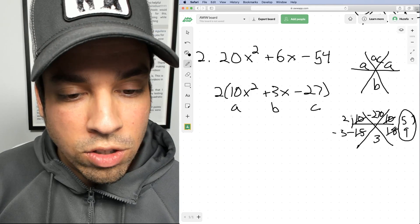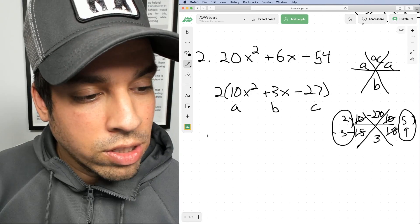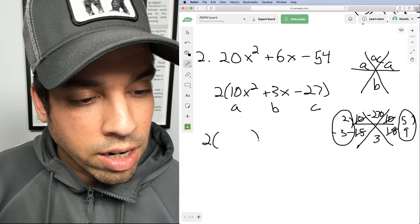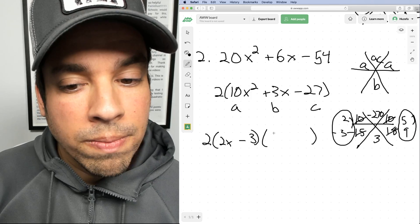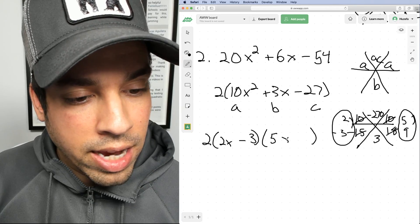Here's my factor pair and here's my factor pair. So now when we factor this again, don't forget that two is still on the outside. It doesn't go anywhere. We've got 2X minus 3 and we've got 5X plus 9.